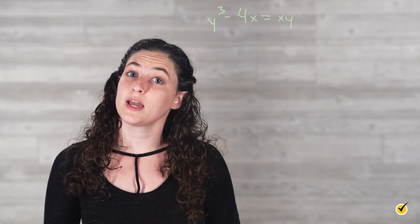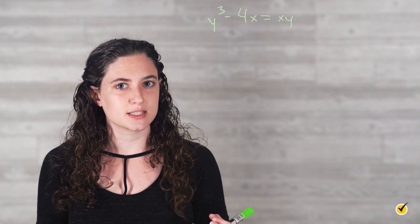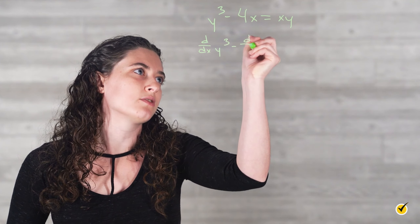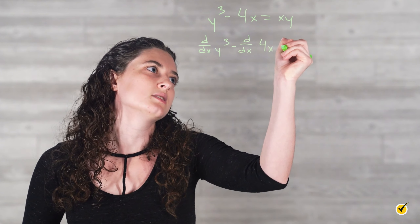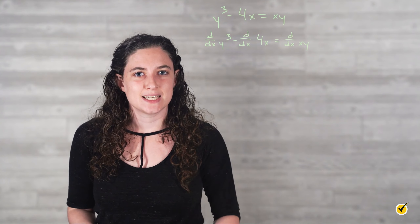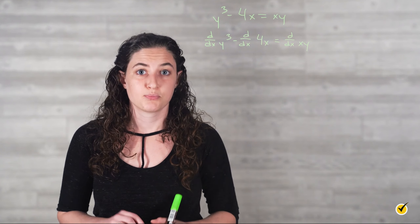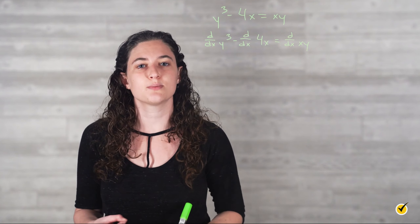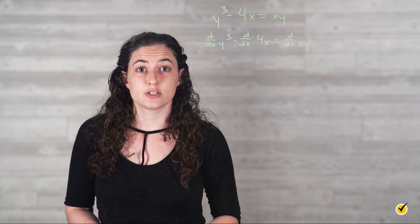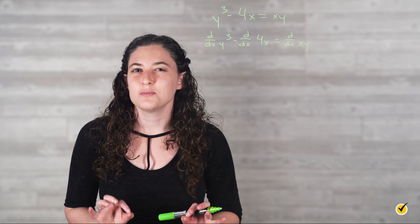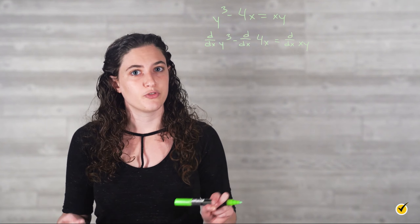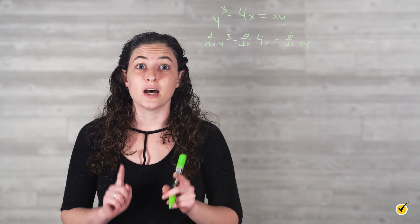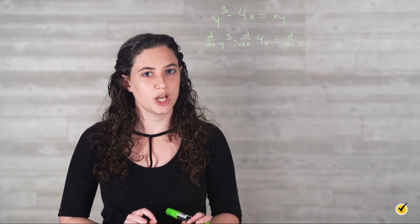Just like in the last example, we can start the implicit differentiation process by writing d over dx in front of each term. This will give us d over dx of y cubed minus d over dx of 4x is equal to d over dx of xy. Next, we need to take the derivative of each term with respect to x. Notice that the first term is y cubed. This is different from y to the first power, which we could take the derivative of just by writing dy over dx. Because we are taking the derivative with respect to x, we have to remember that y is a function of x. We are essentially seeing a function, y, inside another function, a cube — so we need to use the chain rule for this term.